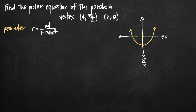You'll remember that the directrix is an equal distance away from the parabola as the focus. So we know that the distance between the focus and the vertex of the parabola — this distance right here — is equal to 4.